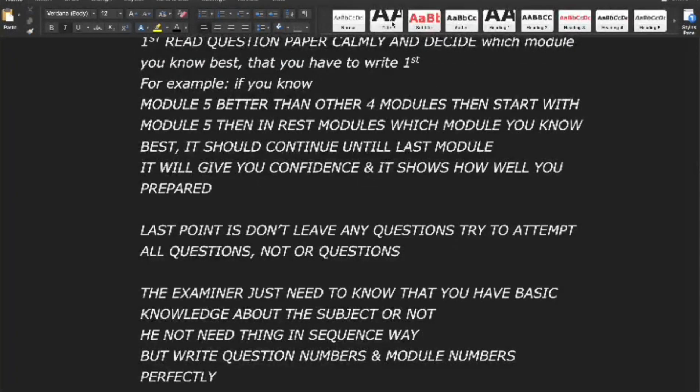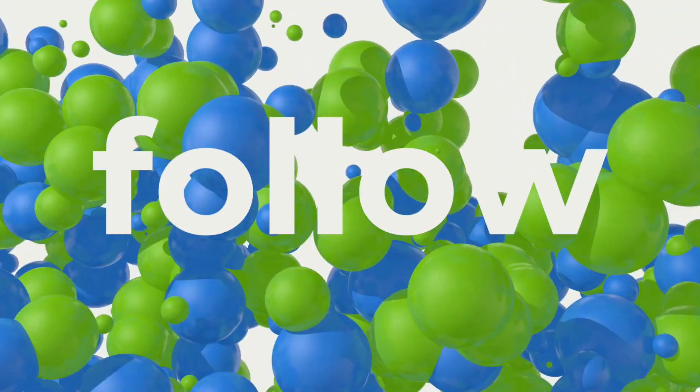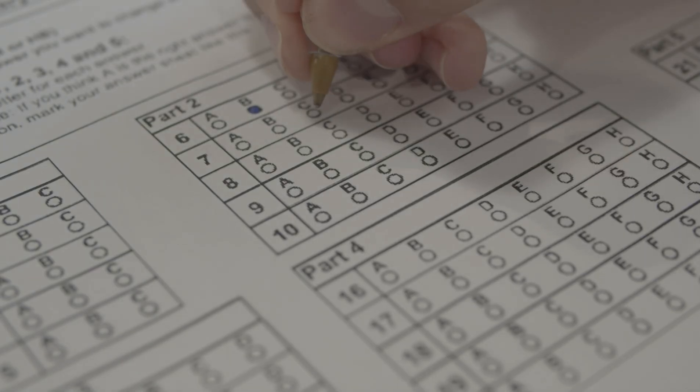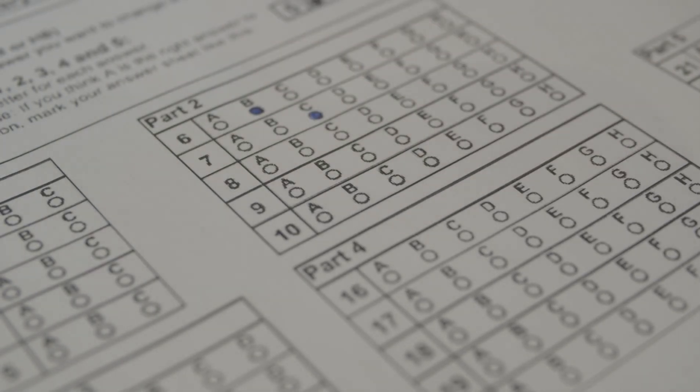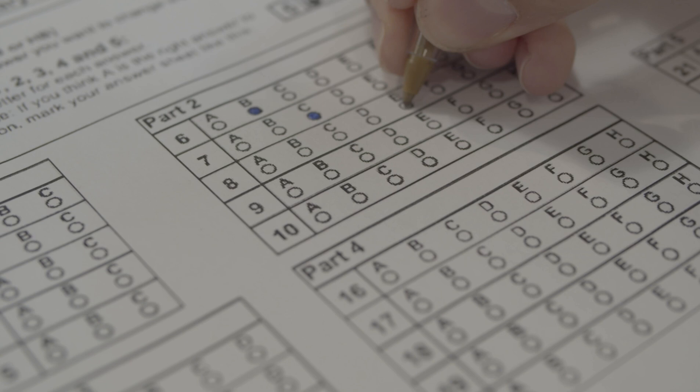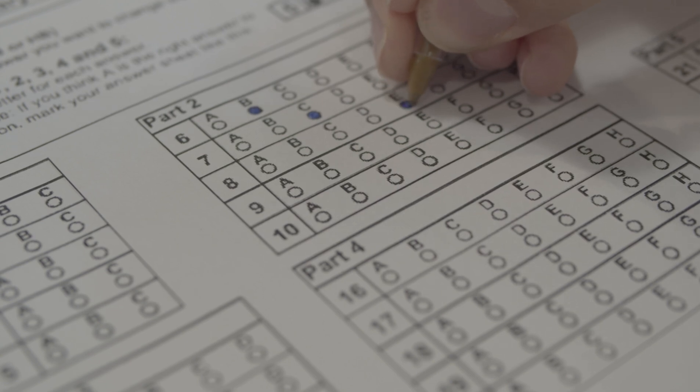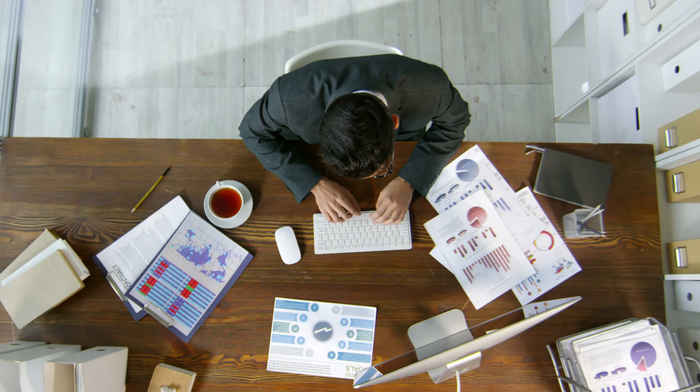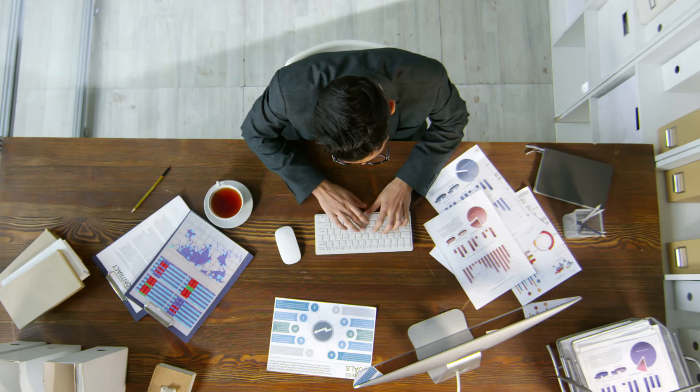Write question and module numbers perfectly. Ensure these are clearly mentioned. By following this approach, you can easily score 90 plus in the chemistry exam. If you're looking for solved model papers and previous year question solutions for physics and other engineering subjects, subscribe to the channel. We're here to make your exam preparations simple and stress-free.